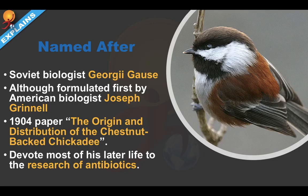The law is named after Soviet biologist Georgy Gause, although it was first formulated by American biologist Joseph Grinnell in his 1904 paper, 'The Origin and Distribution of the Chestnut-backed Chickadee.' Grinnell devoted most of his later life to the research of antibiotics, which proved to be of great help for soldiers during World War II. Gause published his paper on the same topic in 1934.